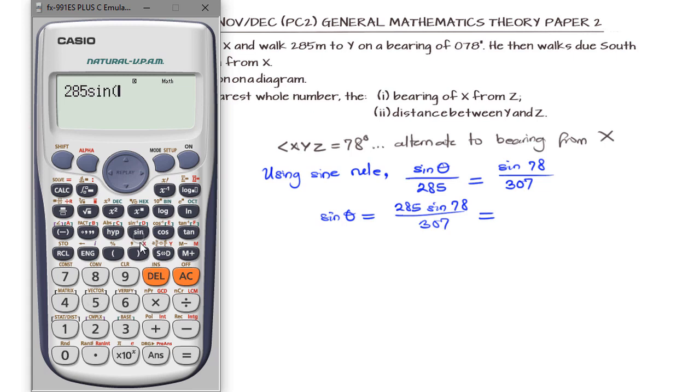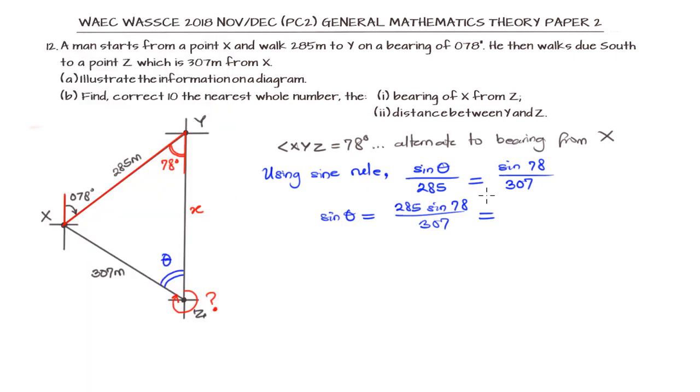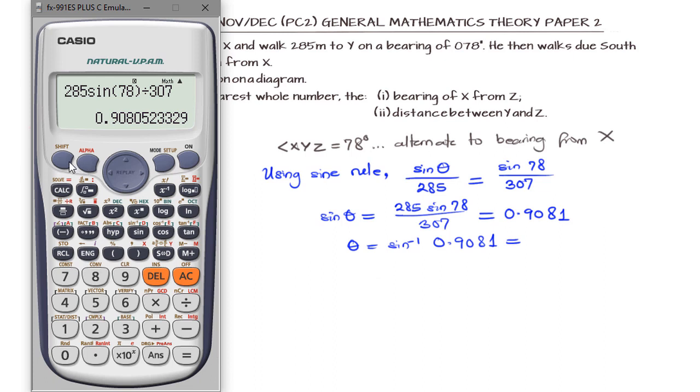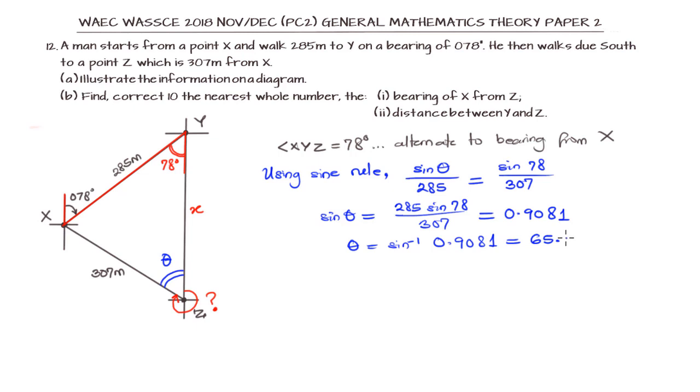By cross-multiplying, sine theta will be 285 times sine 78 divided by 307. Using our calculator, that gives us 0.90805. So theta is arcsin 0.9081, which equals 65.24 degrees. That angle theta included in the triangle is 65.24 degrees.